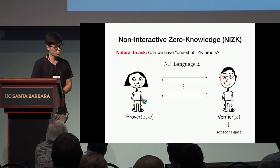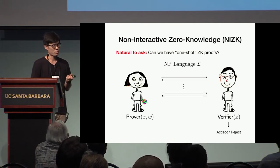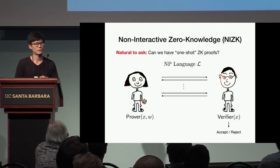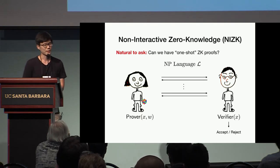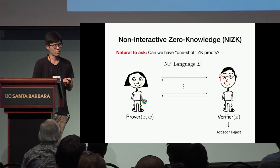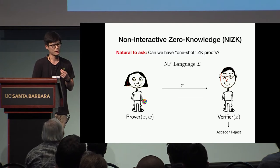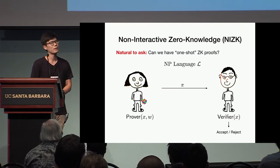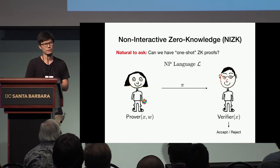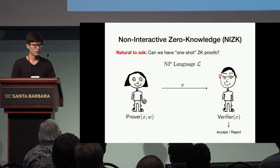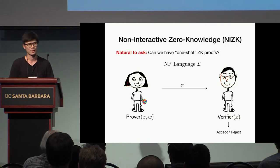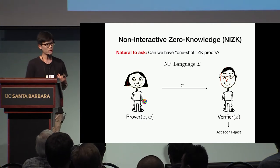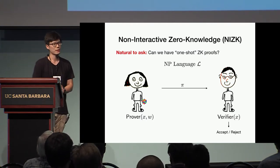For standard zero-knowledge proofs, the prover and the verifier are allowed to send messages back and forth and interact in many rounds. Now we're asking whether there exists a protocol where the prover just has to send a single message to the verifier, and this is enough for the verifier to accept or reject the proof. This is what we call a non-interactive zero-knowledge proof system, NIZK for short, and this will be the main object of study in this work.